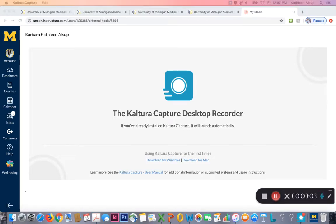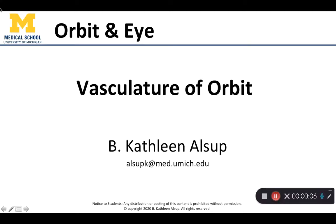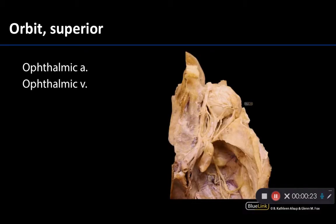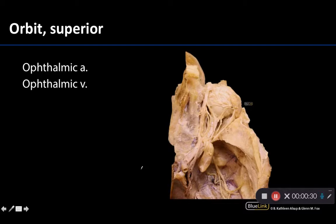It would not be anatomy if we did not talk about vasculature. While we're looking at this dissection and a superior or anterior view of the orbit, nerves and muscles seem to be the star of the show, but it is important to note that there are important vascular structures we want to locate. When looking at this particular view, it is really the ophthalmic artery and the ophthalmic vein that you want to pay attention to.